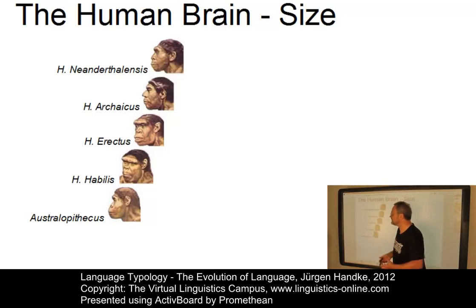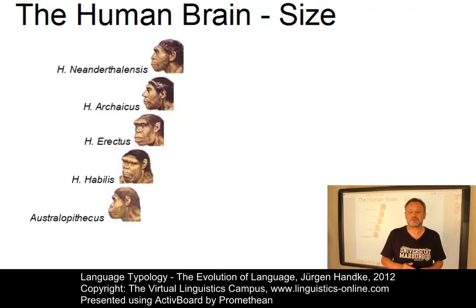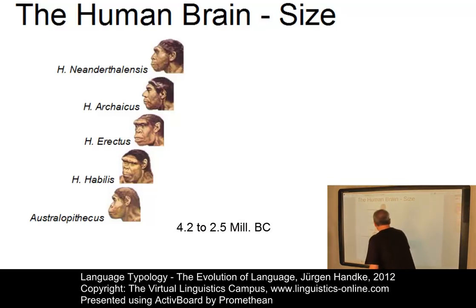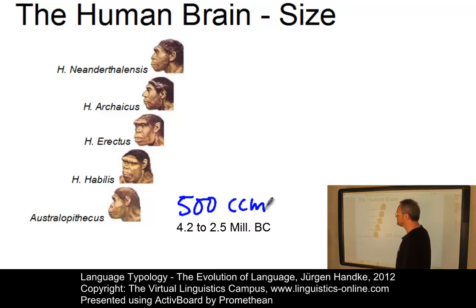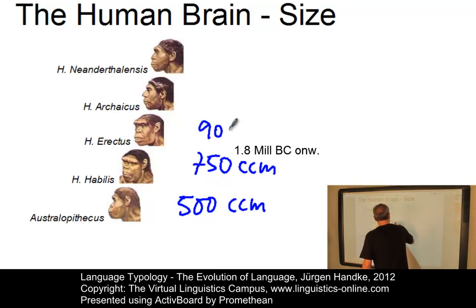The most important prerequisite for the production of language is a well-developed central nervous system with an elaborate cortex. While the Australopithecus cortex volume did not exceed 600 cubic centimeters, Homo sapiens exhibits an average brain volume of roughly 1,400 cubic centimeters. The Australopithecus brain has a volume of roughly 500 cubic centimeters. Homo habilis brain is larger, roughly 750 cubic centimeters. Homo erectus had a brain of something like 900 cubic centimeters.